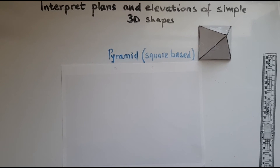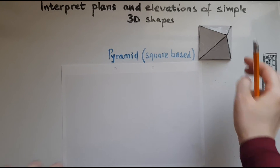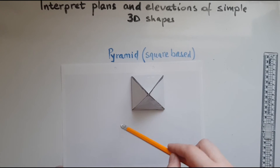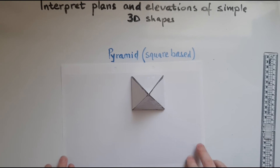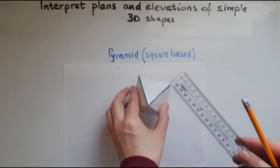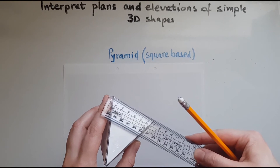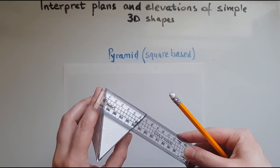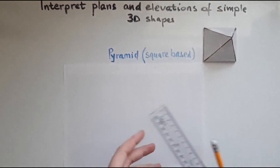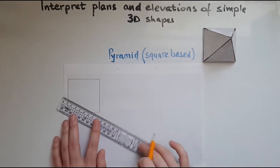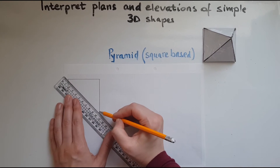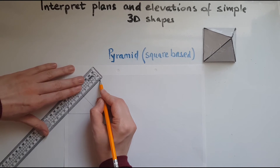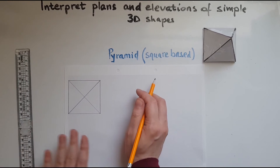Now we'll draw the plan and elevations of a square base pyramid. Starting with the plan, what we can see is a square with diagonal lines going across. We'll measure the dimensions of the base, which is 6.6 centimetres. It's a square, so the other side will also be 6.6. We need to draw the diagonal lines on top. And there we have the plan.